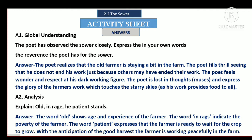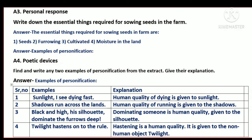Question A2 is on analysis. Explain: 'Old in rags, he, patience, stands.' The word 'old' shows the age and experience of the farmer and indicates the poverty of the farmer. The word 'patient' expresses that the farmer is ready to wait for the crop to grow. With the anticipation of a good harvest, the farmer is working peacefully in the farm. This is the answer.